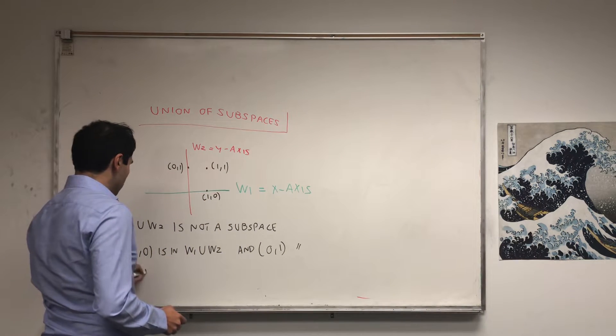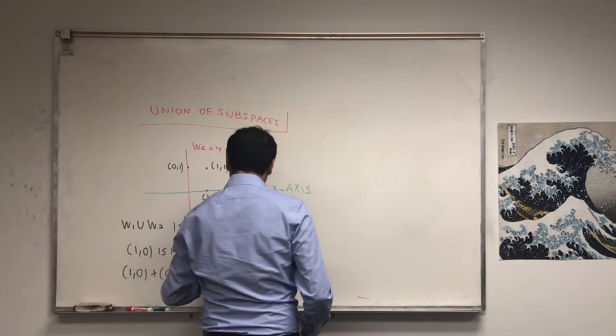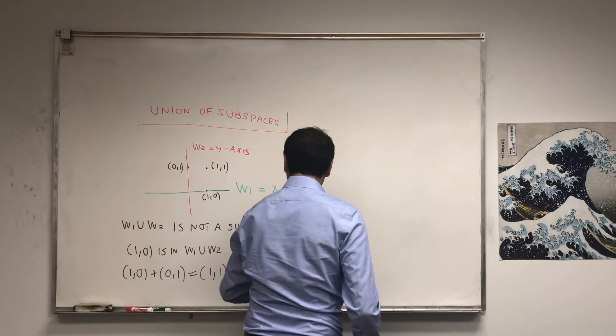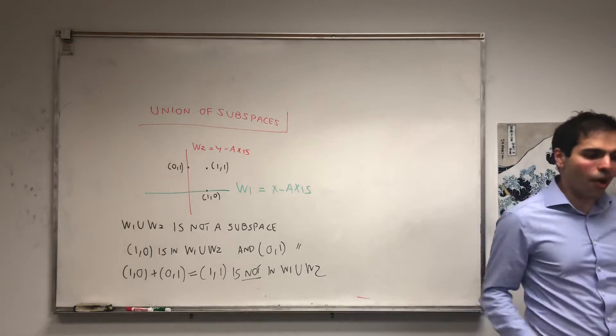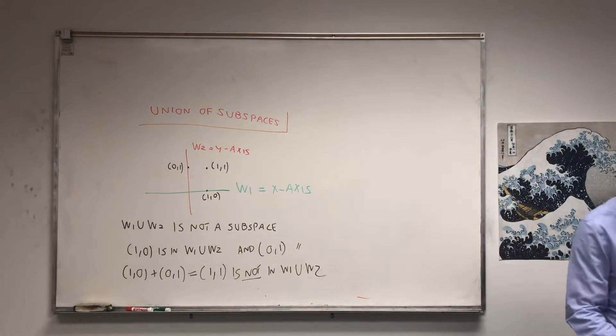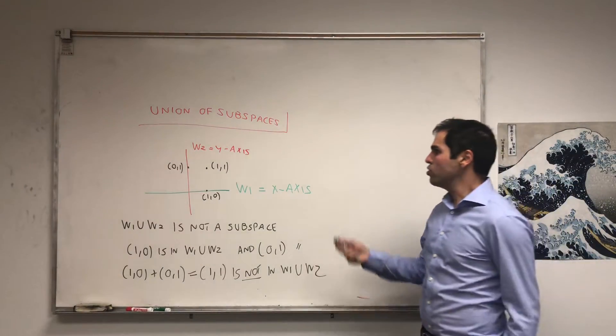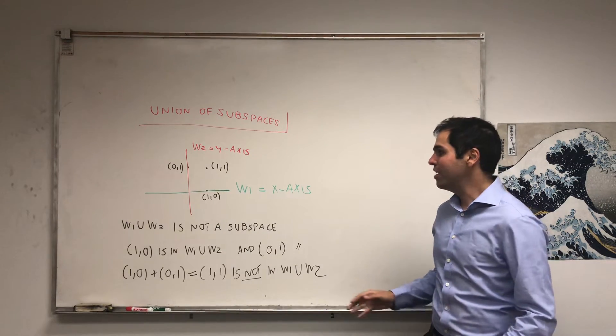So (1,0) plus (0,1), which is (1,1), is not in W1 union W2. So that's a problem. In general, the union of subspaces is not a subspace, because it's not closed under addition. It is closed under scalar multiplication, but it's not closed under addition in general.